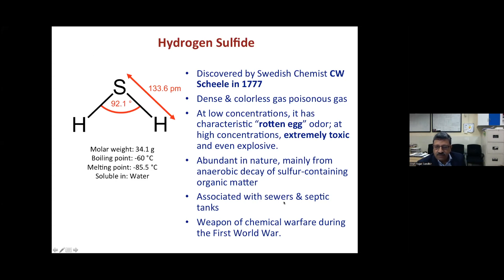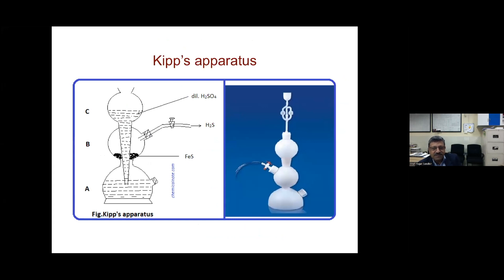H₂S is soluble in water and abundant in nature, mainly coming from anaerobic decay of sulfur-containing organic matter. The rotten egg smell from sewers and septic tanks is what we've known for many centuries. It was also used as a weapon of chemical warfare during the First World War. The famous Kipp's apparatus was used in chemistry experiments — iron sulfide with acid — to generate H₂S for analytical experiments.